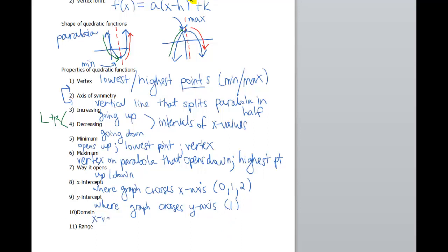Domain is gonna be your x-values. And typically, for your domain, it's gonna be all real numbers. Because your parabola will go forever in both directions. As far as the range goes, that's your y-values. And this one is not all real numbers. So it's either gonna be the numbers that are above your vertex or the numbers that are below your vertex. So this has to do with the vertex. Either above or below.